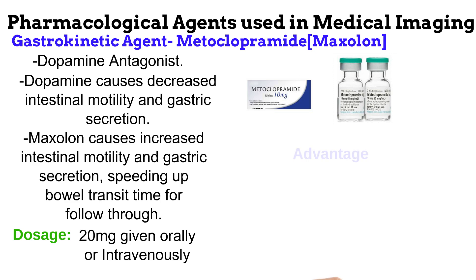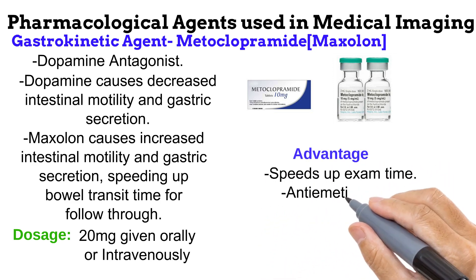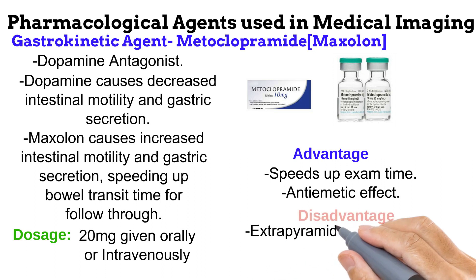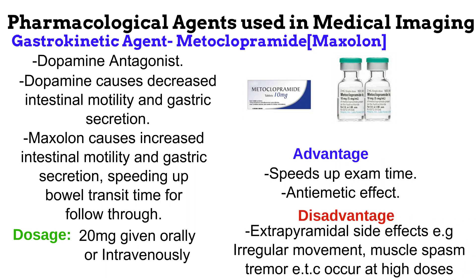Maxolon speeds up the exam time by allowing barium to transit faster from the stomach to the small intestine, so contrast media travels in less time and barium follow-through investigations can be performed faster. Another advantage is that it has an antiemetic effect, meaning that it prevents vomiting — very helpful in nauseated patients. However, Maxolon causes certain drug-induced movement disorders known as extrapyramidal side effects, such as irregular movements, muscle spasm, and tremor, especially at high doses.